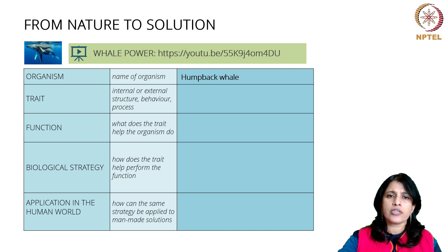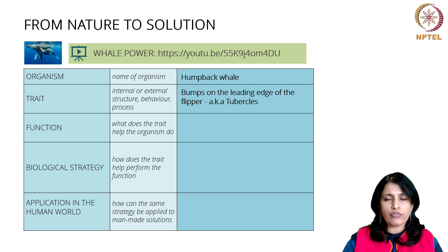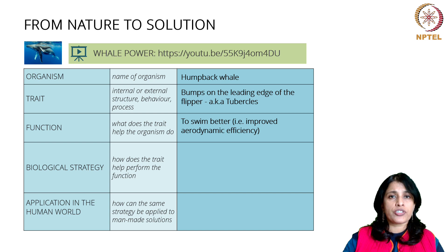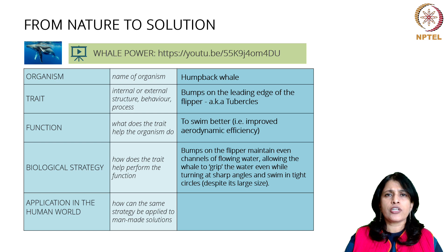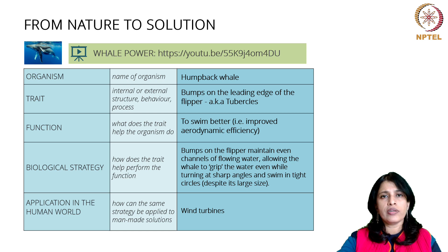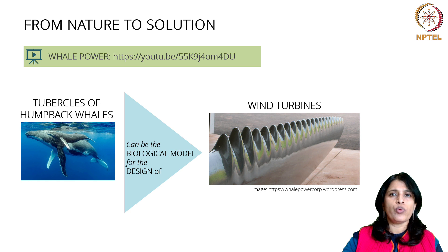The trait of the humpback whale they examined is the bumps on the leading edge of the flipper — small bumps called tubercles. The function of the tubercles is to help the whale swim better. The strategy employed is to allow the whale to grip the water better. Using that strategy, Whale Power decided that the problem it could solve in the human world was wind turbines. They used the tubercles as a biological model to create improved wind turbines.